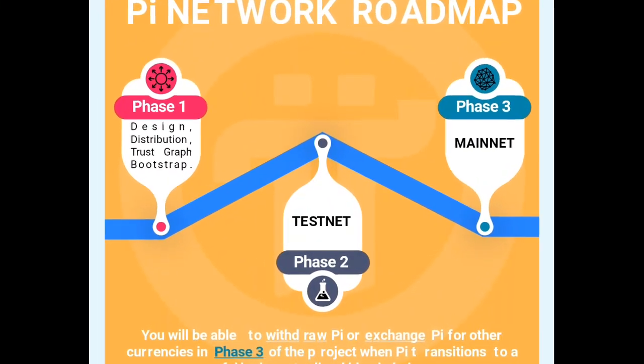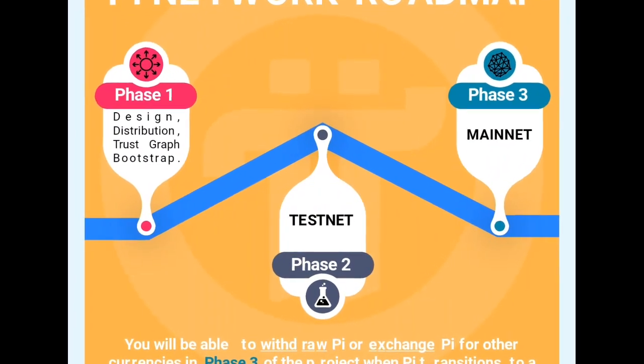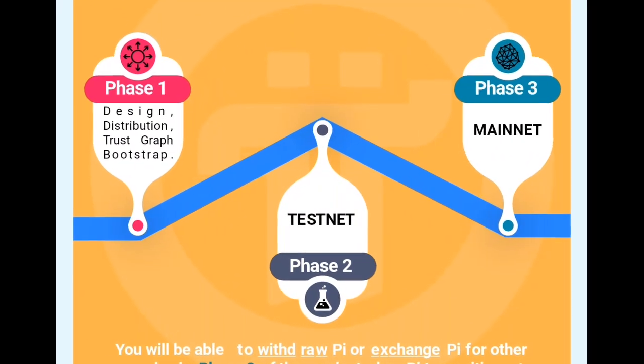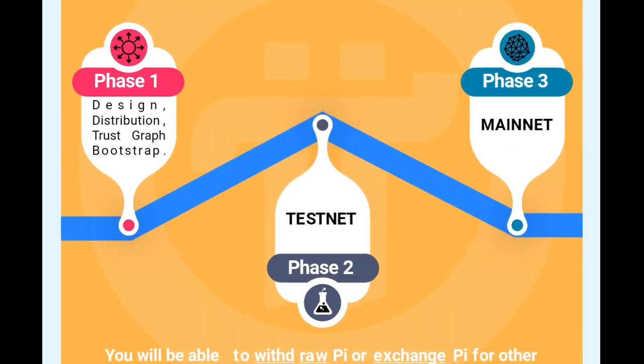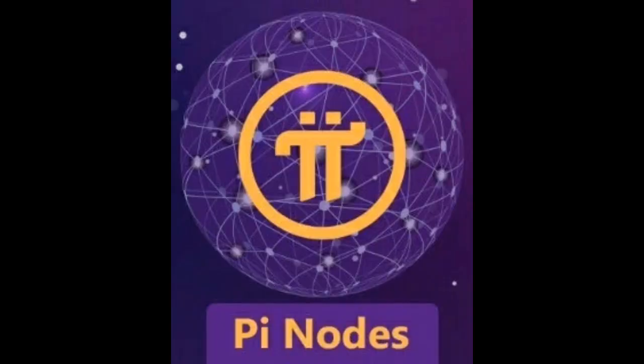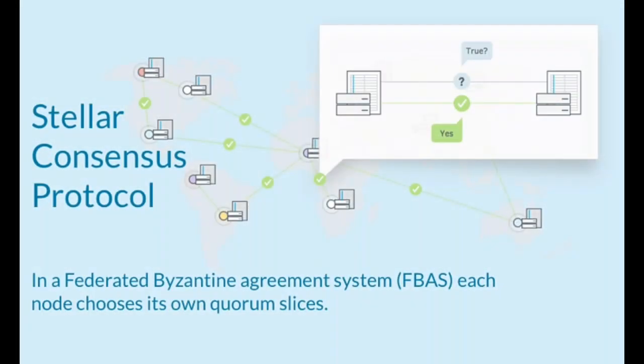Many pioneers may be able to have the opportunity to build a PI node during the test phase. Each node can independently validate a transaction. The network, though, must come to a consensus to determine which transactions to record on a block, and the order of these transactions and the blocks.